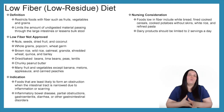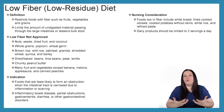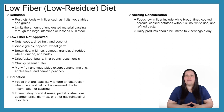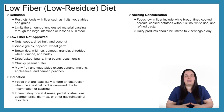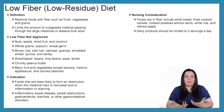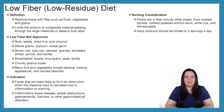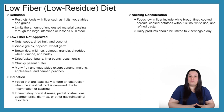Next, let's get into more restricted diets, beginning with the low fiber, low residue diet. This is a restriction of foods with fibers such as fruits, vegetables, and grains, to limit the amount of undigested material passing through the large intestine, reducing bulky stools. Foods not approved include nuts, seeds, dried fruit, coconut, whole grains, popcorn, wheat germ, brown rice, wild rice, oatmeal, granola, shredded wheat, and quinoa.